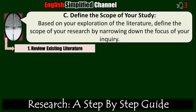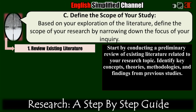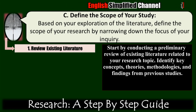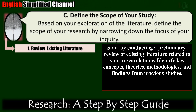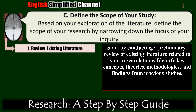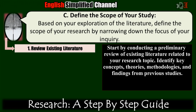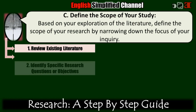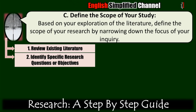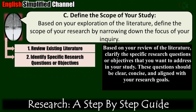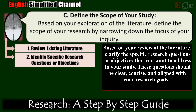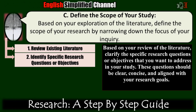Here are steps to help you define the scope of your study. First, review existing literature. Start by conducting a preliminary review of existing literature related to your research topic. Identify key concepts, theories, methodologies, and findings from previous studies. This will help you understand the broader context of your topic and identify areas that warrant further investigation. Second, identify specific research questions or objectives. Based on your review of the literature, clarify the specific research questions or objectives that you want to address. These questions should be clear, concise, and aligned with your research goals.